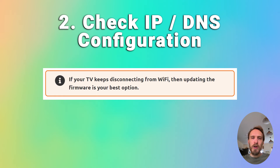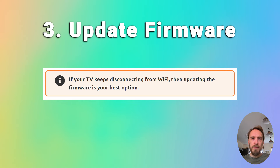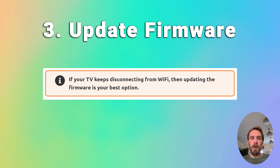You can also try updating your TV's firmware. If your TV keeps disconnecting from Wi-Fi, updating the firmware is usually the best option. Go to Settings > Support > Software Update, make sure auto-update is on, and press Check Now or Update Now. Older TV models may need firmware updated by USB — steps for this are in the linked article below.